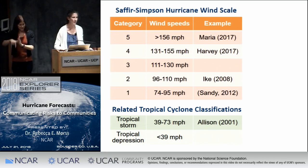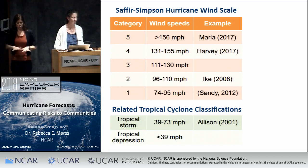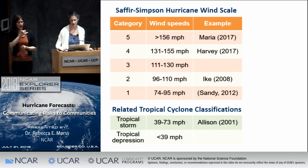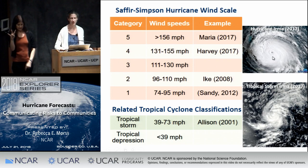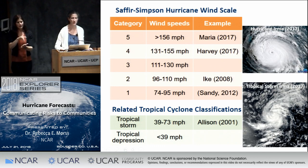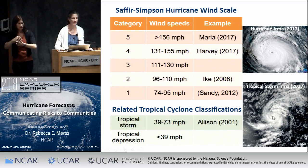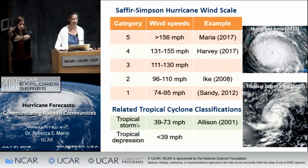Hurricanes are a type of tropical cyclone. In the Atlantic, strong tropical cyclones are called hurricanes. Before a hurricane becomes strong enough, it's called a tropical storm or tropical depression. On the right is a satellite picture of Hurricane Irma from the 2017 season. The wind rotates counterclockwise around the hurricane, and you can see the eye at the center. This also shows tropical storm Irma earlier in its lifetime before it became a hurricane — it still has a similar circulation but no well-formed eye yet.